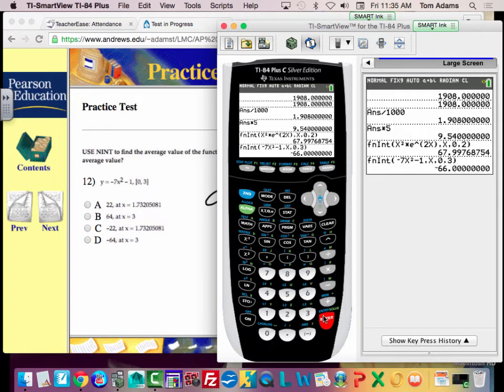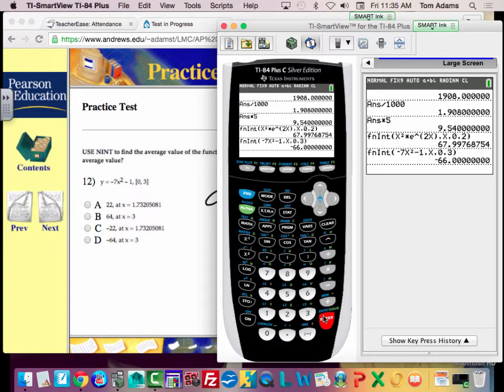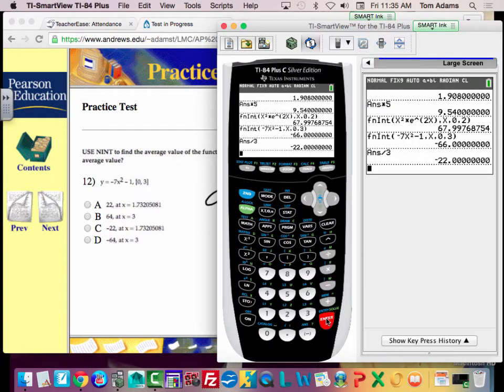So this is going to give me the area under the curve of this thing, and I got to divide it by 3, right? So when I divide it by 3, I get negative 22.